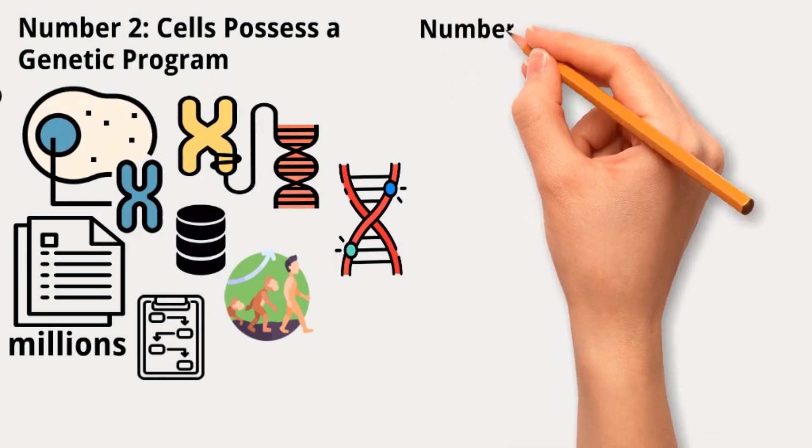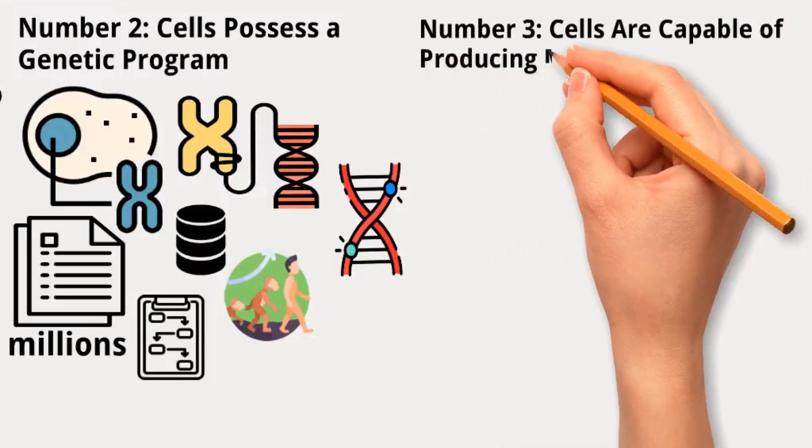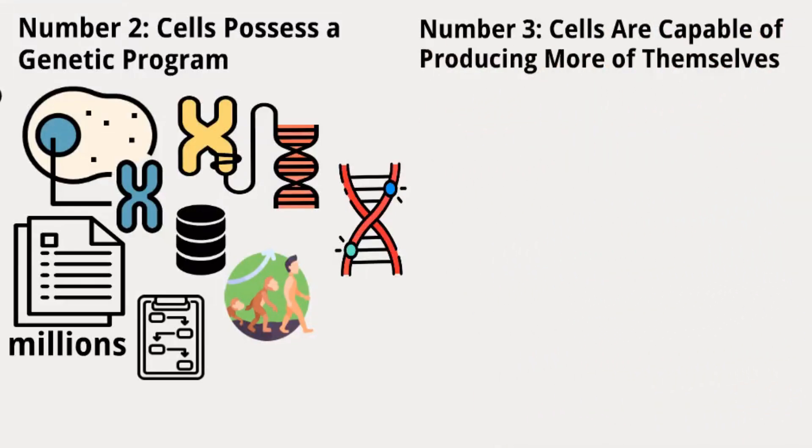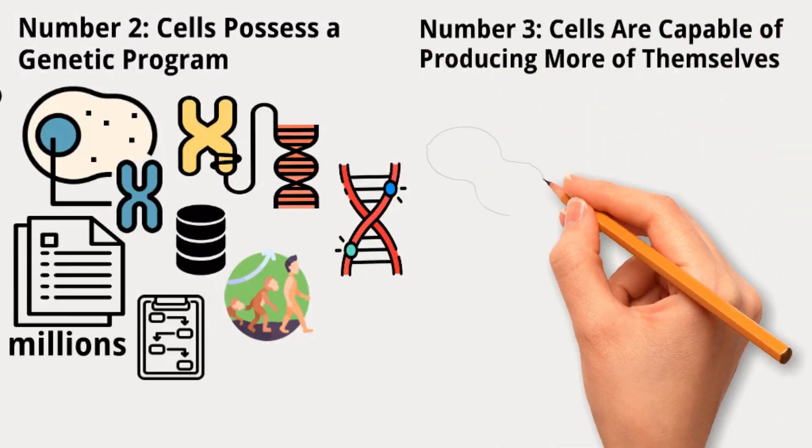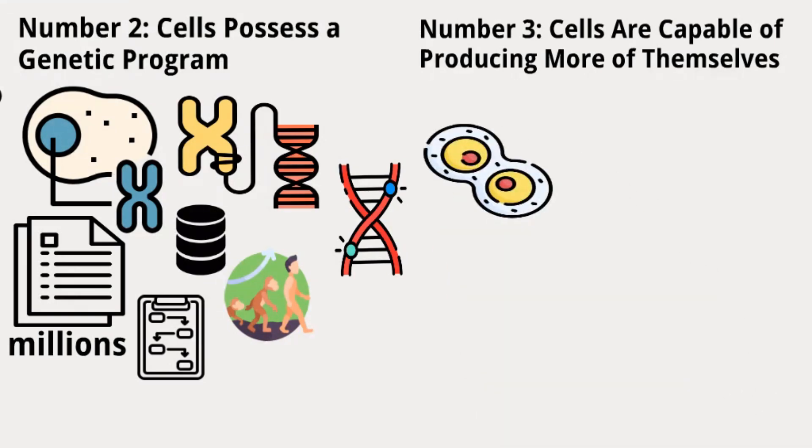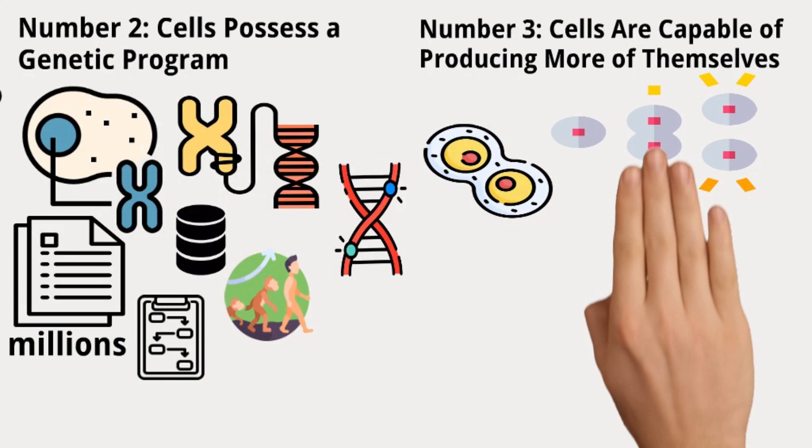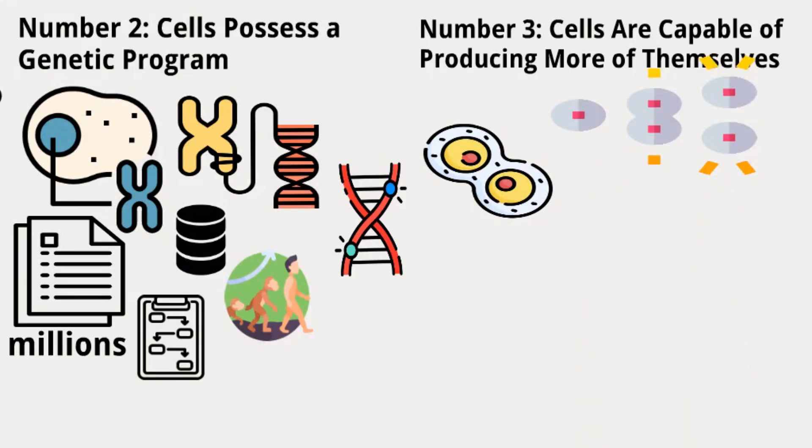Number 3: Cells are capable of producing more of themselves. Except germ cells, like sperm and egg, cells can multiply through a process called cell division. In this process, the contents of one mother cell are divided into two daughter cells.